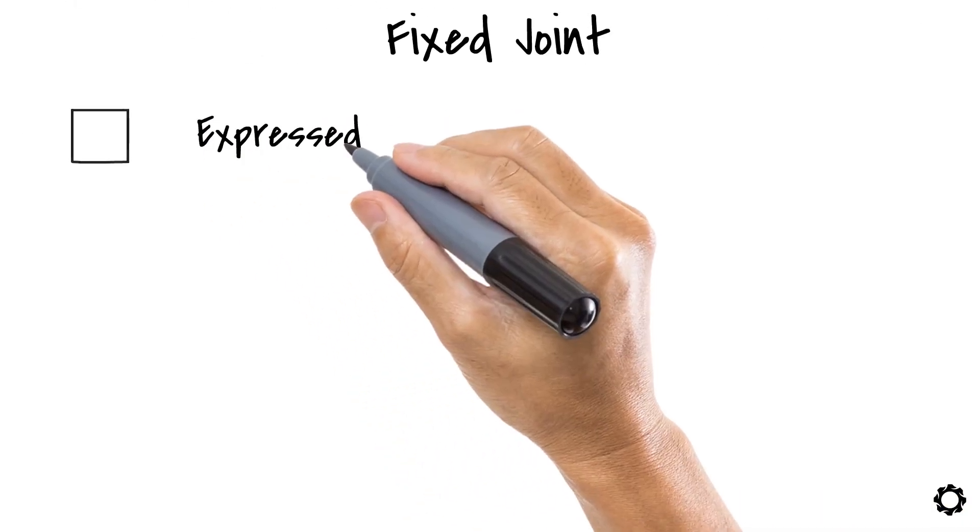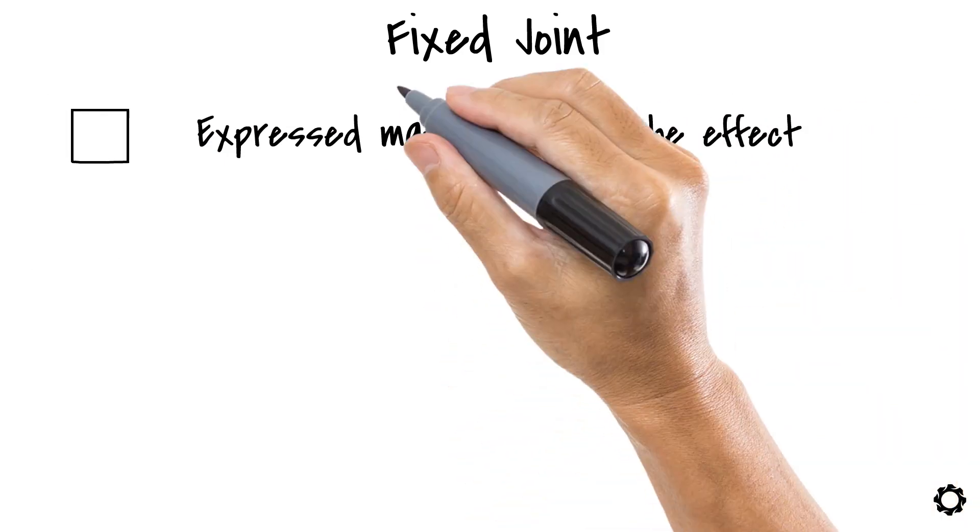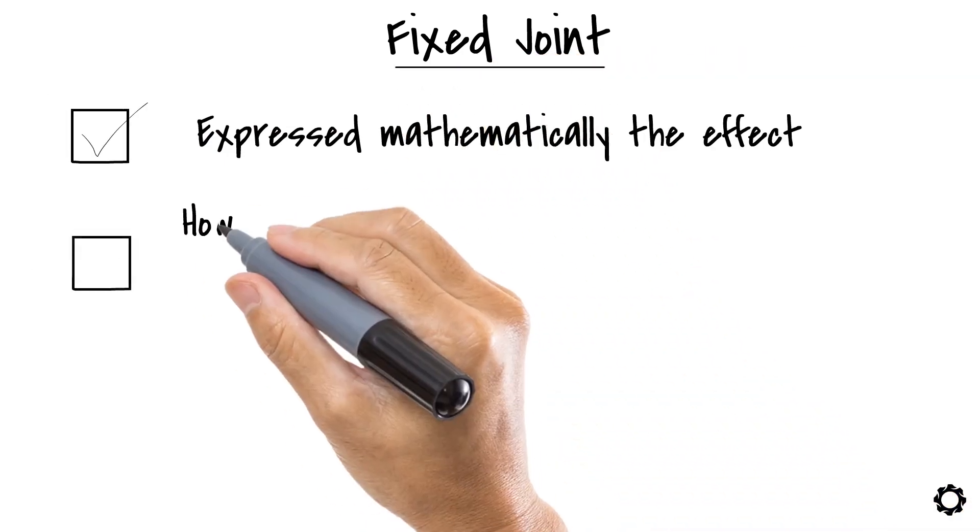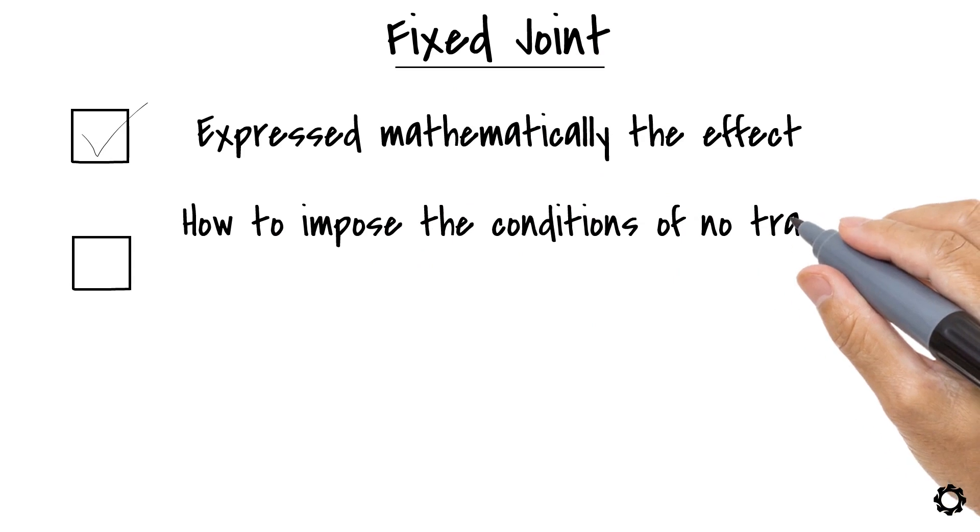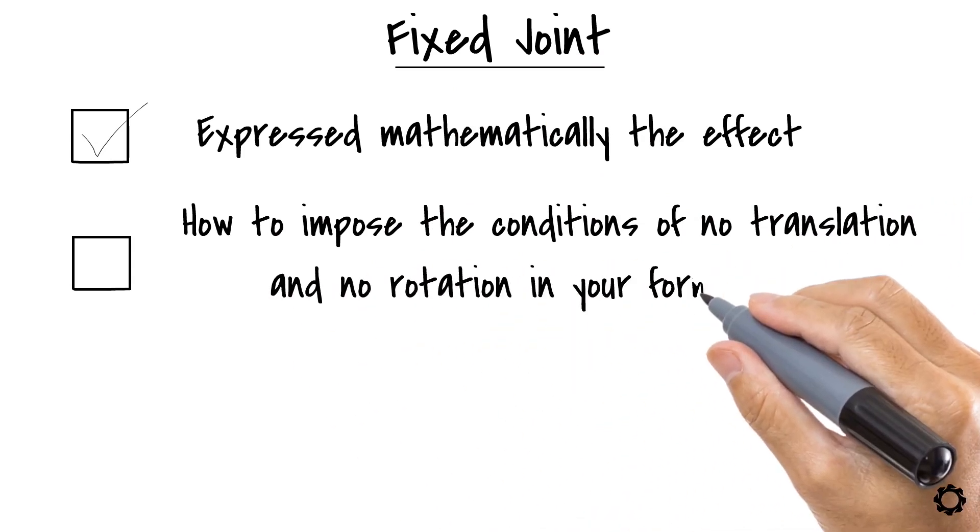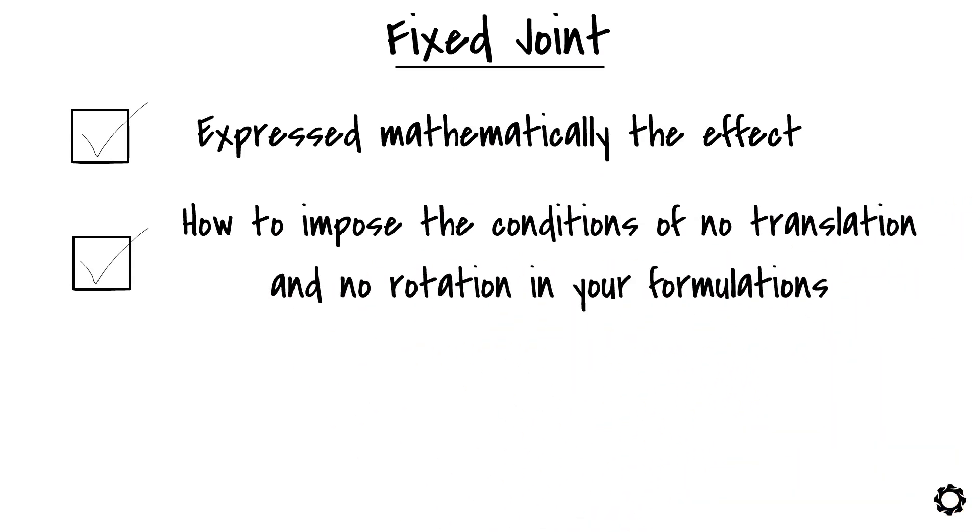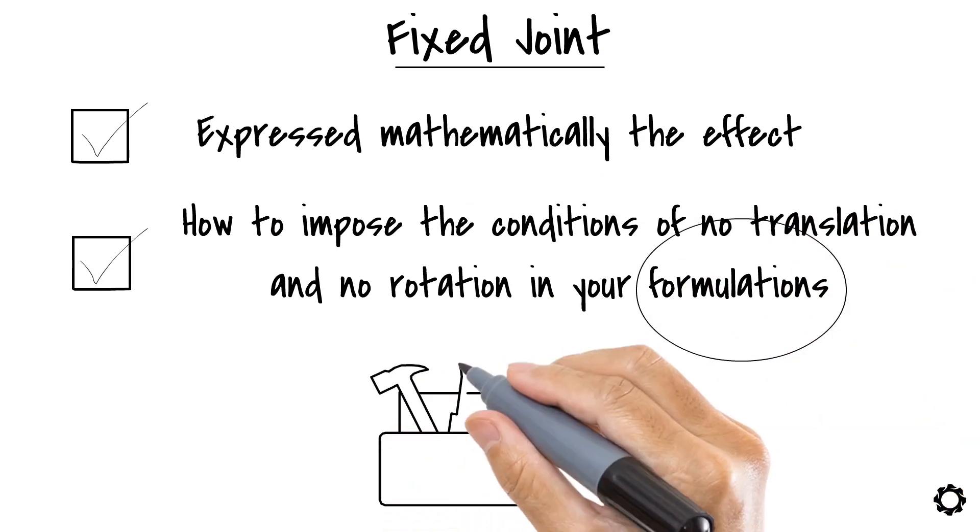In this video, we expressed mathematically the effect of a fixed joint. Now you know how to impose the conditions of no translation and no rotation in your formulations. Well, we haven't got to that specific part, but you are collecting the tools for that purpose. I hope you've liked this lesson.